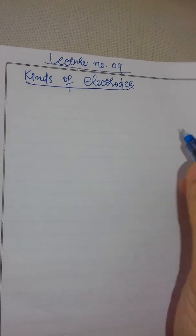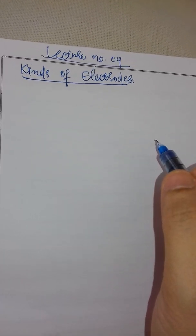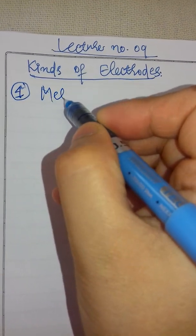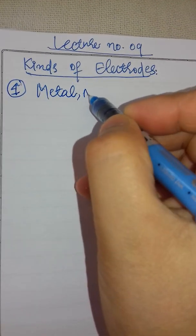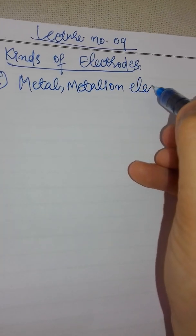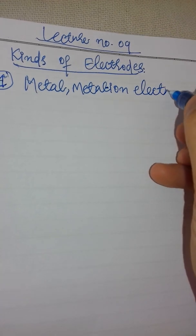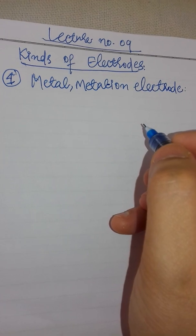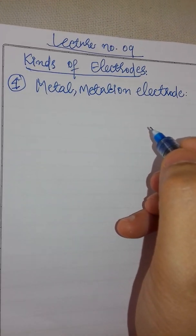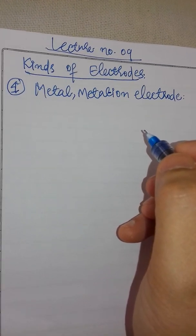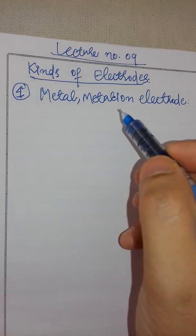Good morning friends. Today our topic is kinds of electrodes. The first electrode we have is the metal-metal ion electrode. This is the simplest electrode — simplest in the sense that it is the most easy. You have used it every time you have studied it, but you didn't know it was this kind of electrode.